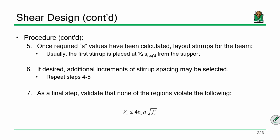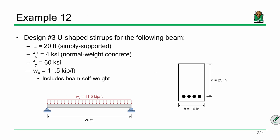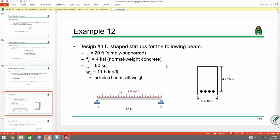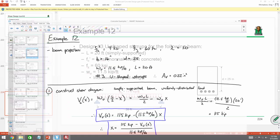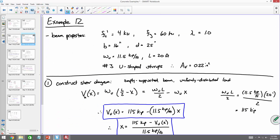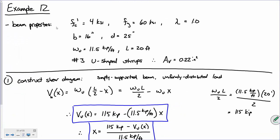We were looking at the following example last time where we were to design number 3 U-shaped stirrups for this beam. Here are the parameters: 20 foot long, 4 KSI concrete, 60 KSI steel, normal weight. The dimensions of the beam are on the right. Simply supported, uniformly distributed load. The factored load is pretty heavy, 11.5 kips per foot.